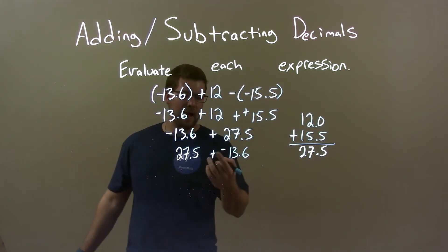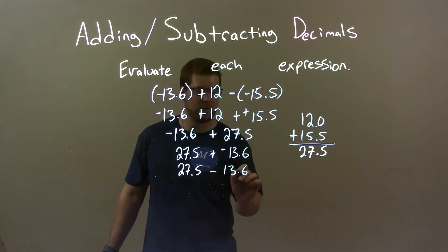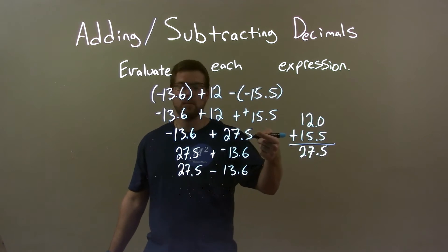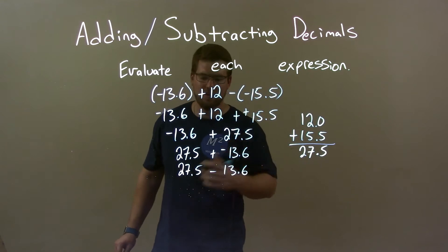Adding a negative, same thing as subtraction. 27.5 minus 13.6. And you'll, at some point, be able to jump from here to here. But if not, you're going to do these steps.